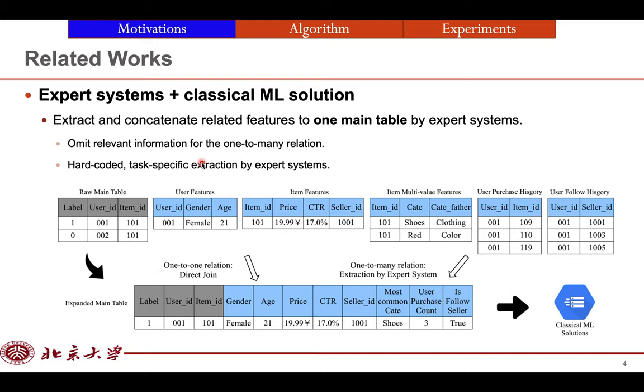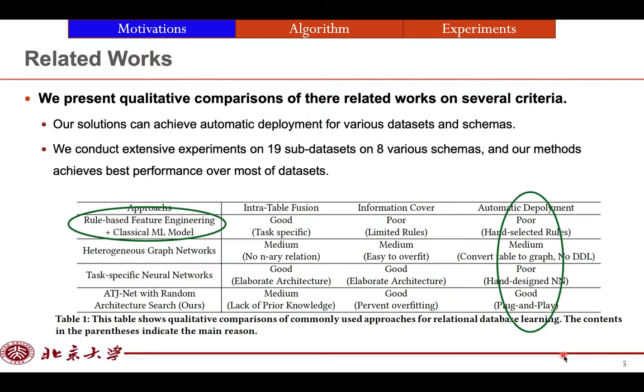The traditional way, which is very common in industrial deployment, uses classical machine learning solution plus expert systems. The expert extracts the information from other tables and concatenates with the main table. We can join the table for the one-to-one relation directly, but we need to aggregate some tables for the one-to-many relations. Finally, we send the expanded main table as the input of the classical machine learning model like SVM and GBDT.